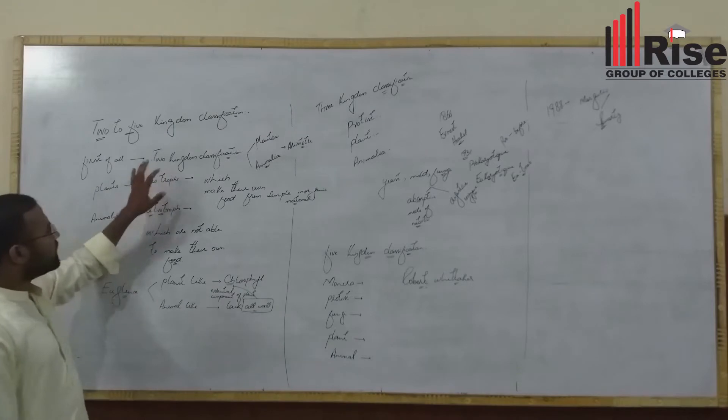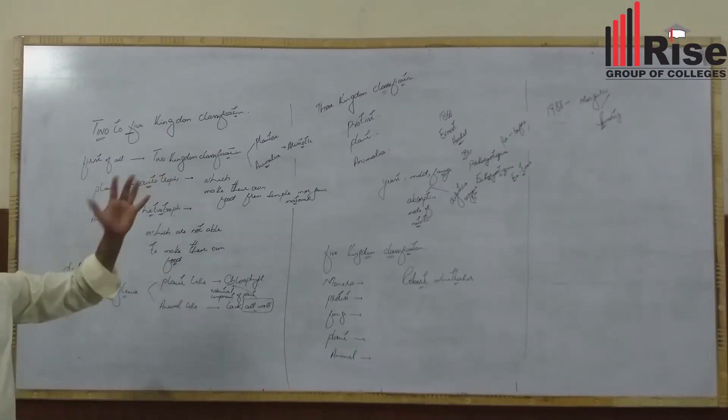This is about two to five kingdom classification. The first one is two kingdom classification.